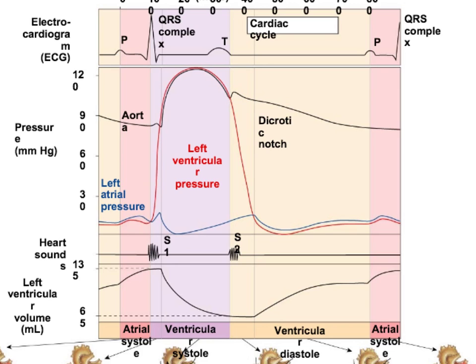You can tell where aortic valve closure is occurring because of the dicrotic notch. It occurs because as you push blood into the aorta, the artery stretches and blood wants to go in all directions, including back into the ventricle. The aortic valve closes, the blood tries to push back but rebounds off the valve, causing a spike in pressure — that's aortic valve closure.